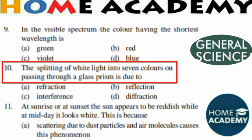Question number 10: The splitting of white light into seven colors on passing through a glass prism is due to what? When white light enters a prism, it undergoes refraction and splits into its component colors. The correct option is refraction. This phenomenon is called dispersion of light.